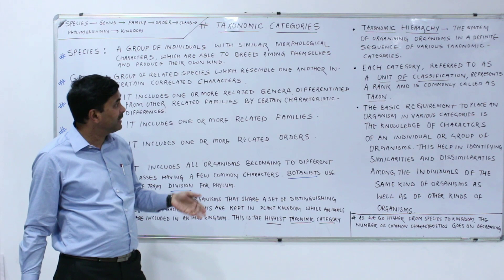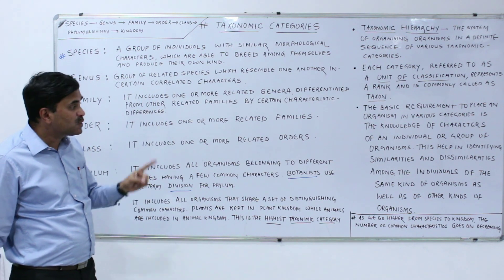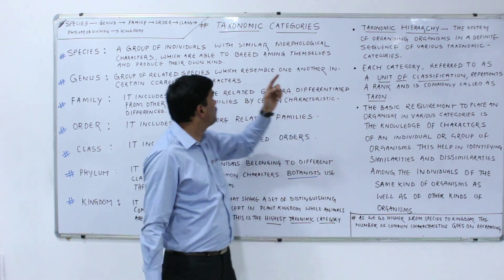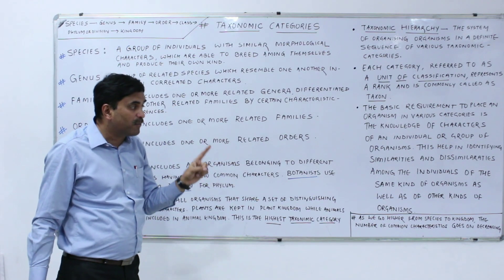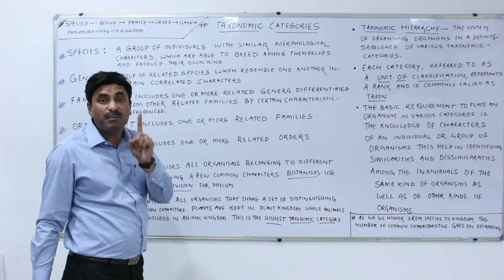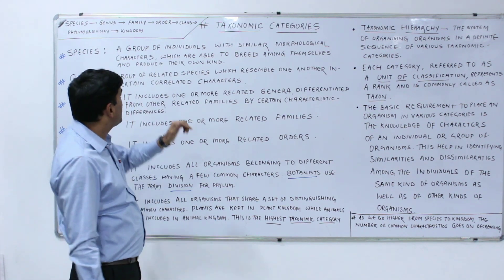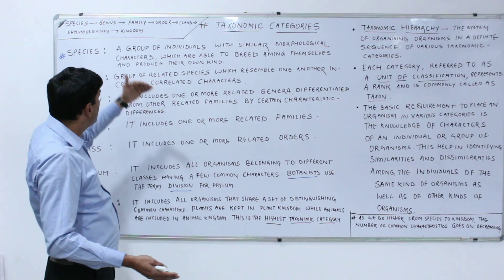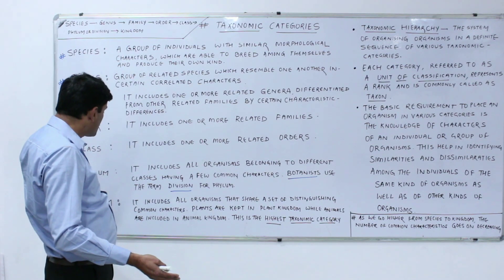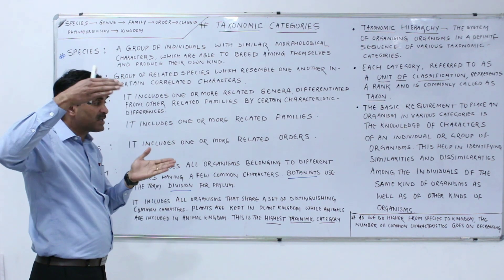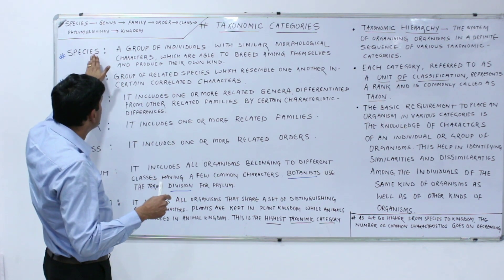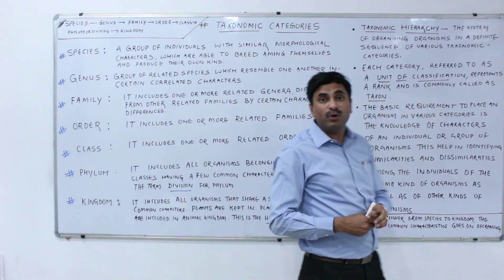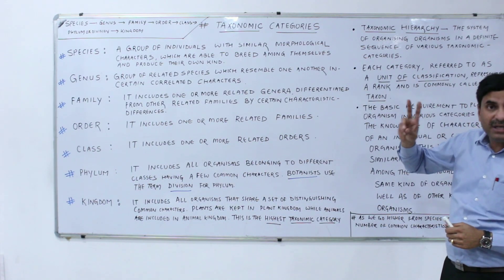Before studying taxonomic categories, you must also know that as we go higher — that is, when we move from species towards the kingdom — the number of common characteristics goes on decreasing. In species, genus, and lower categories you have more common characteristics, but as we move towards the highest taxonomic category, the kingdom, common characteristics go on decreasing.